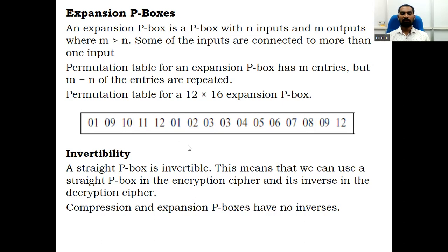We use the straight P-box in DES: we convert 64 to 64 by using the initial permutation, and finally when taking the output, we do the reverse. A straight P-box is used in encryption and its inverse in decryption.